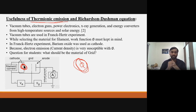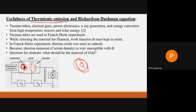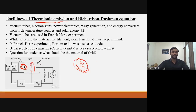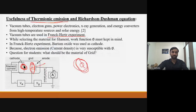Another question: in Franck-Hertz's experiment, if I'm choosing the material for the grid, should its work function be high or low? It should be high. If the work function is high, the electrons emitted due to thermionic emission from the grid will be minimal, so I can minimize sources of error. In the original Franck-Hertz experiment, platinum was chosen as the grid material because platinum has a very high work function. These are key points to keep in mind while designing this experiment.